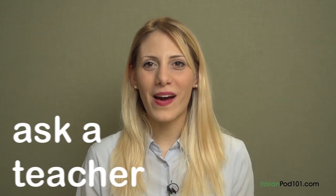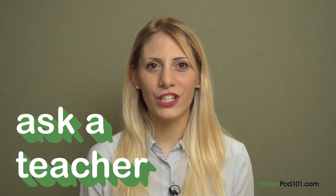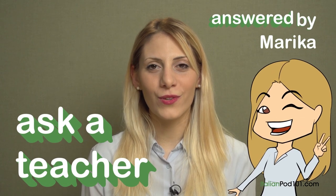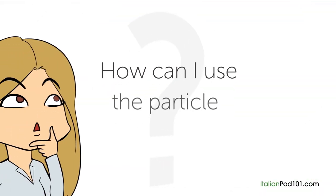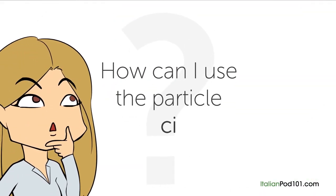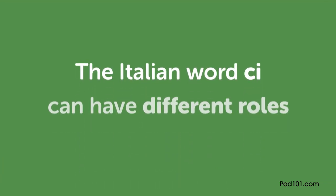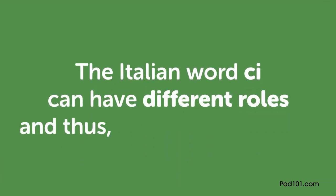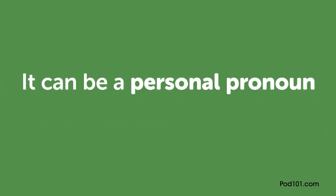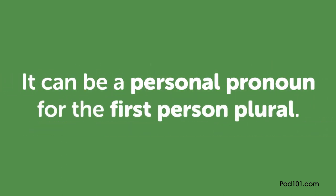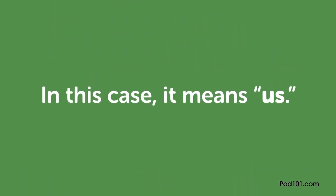Hi everybody, Marika here. Welcome to Ask a Teacher. The question for this lesson is: how can I use the particle CI? The Italian word CI can have different roles and thus different meanings. It can be a personal pronoun for the first person plural — in this case, it means 'us.' Here are some examples: 'Paolo ci ha invitato alla festa' — Paolo invited us to the party. 'La nonna ci leggeva dei libri' — Grandma used to read us books.